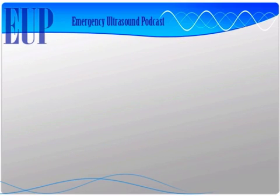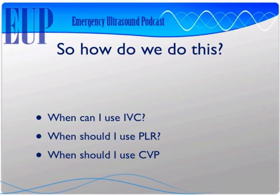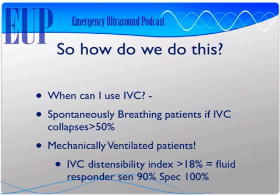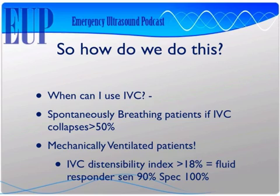Let's break this down into something memorable we can take to the bedside. When can I use IVC? When can I use the passive leg raise? When should I use CVP? For IVC: in mechanically ventilated patients, an IVC distensibility index greater than 18% makes the patient a fluid responder — pretty accurate. In spontaneously breathing patients the data is less clear, but I think IVC collapsing greater than 50% means they need more preload, and it's reasonable to give them fluid.